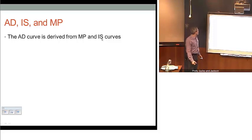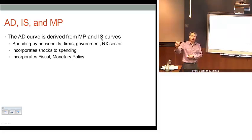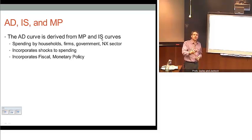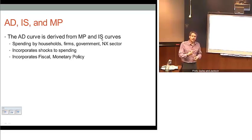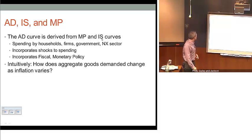The IS and MP curves are going to be integral to our understanding of the aggregate demand curve. When we put all these pieces together, we have on the household side, the firm side, the government side, and the net export side — all spending by all those different sectors of the economy. It incorporates shocks in those various sectors as well, and more importantly, it allows us to understand and explain fiscal and monetary policy.